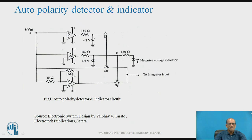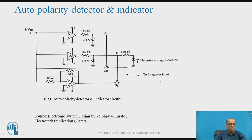When input is positive, output of comparator A1 is high, switch SX is closed; output of comparator A2 is low, switch SY is open. Therefore, input VIN through switch SX comes at the output and is connected to the integrator input. This autopolarity detector and indicator circuit is used at the input side — input is applied to this circuit and the output is given to the integrator input for the DVM, as seen in the earlier lecture. When input is positive, it is transferred to the integrator input as it is.